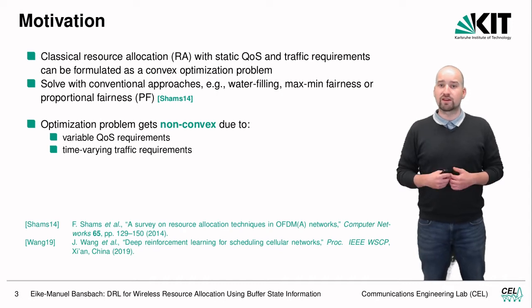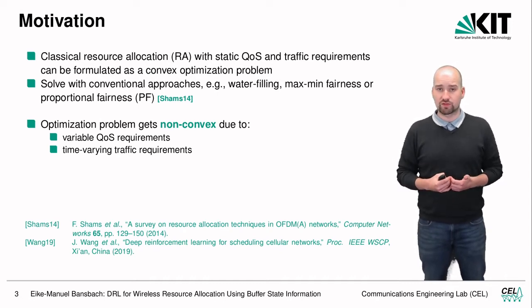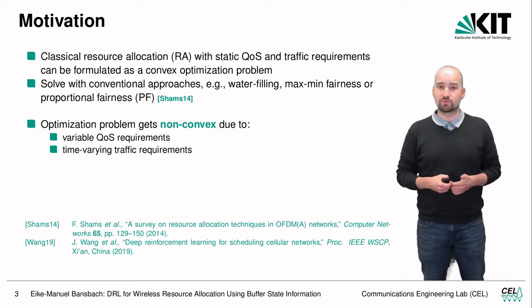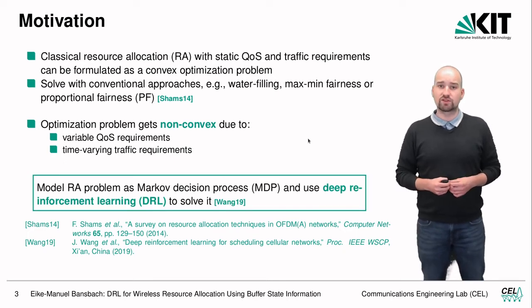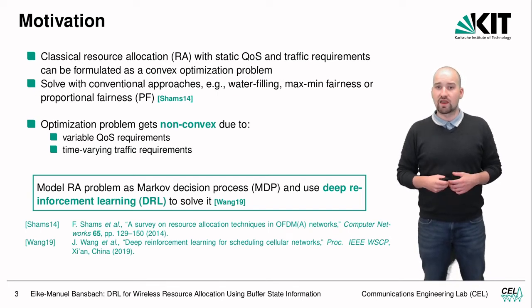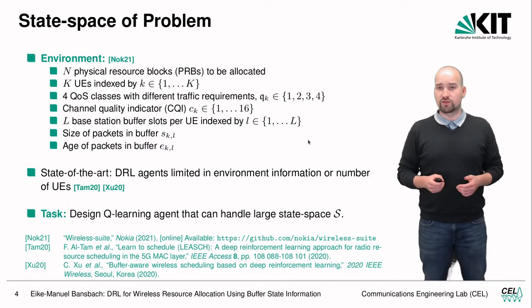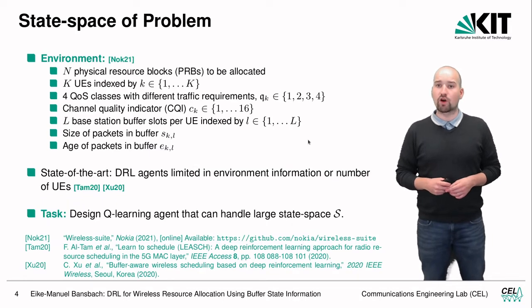However, if we introduce variable quality of service requirements and time-varying traffic requirements, the optimization problem becomes non-convex. We can model the non-convex resource allocation problem as a Markov decision process and use deep reinforcement learning to solve it.